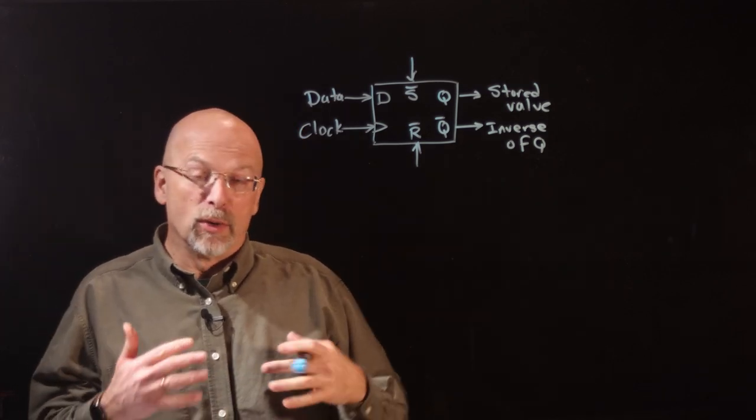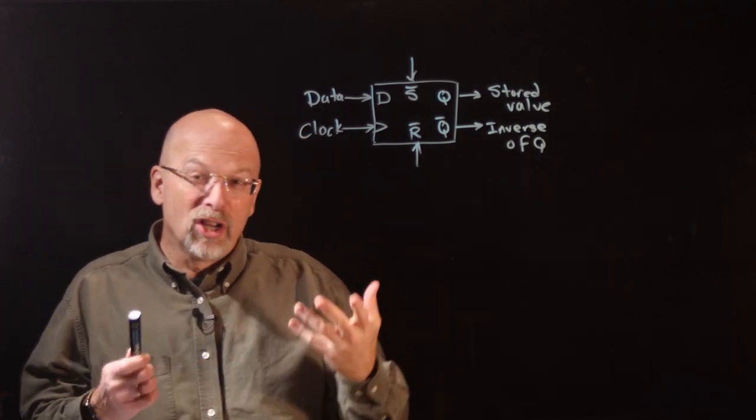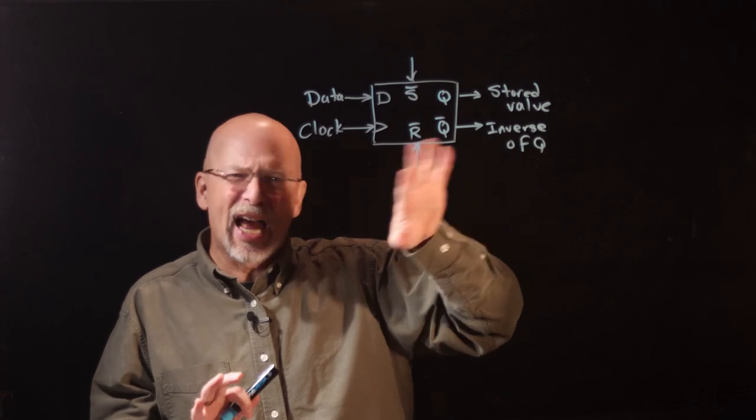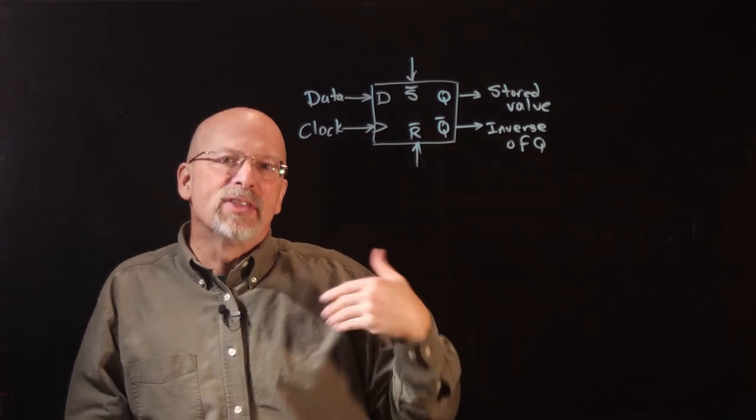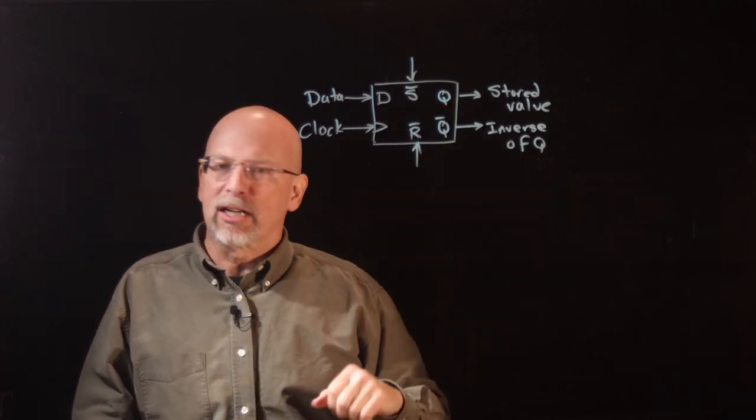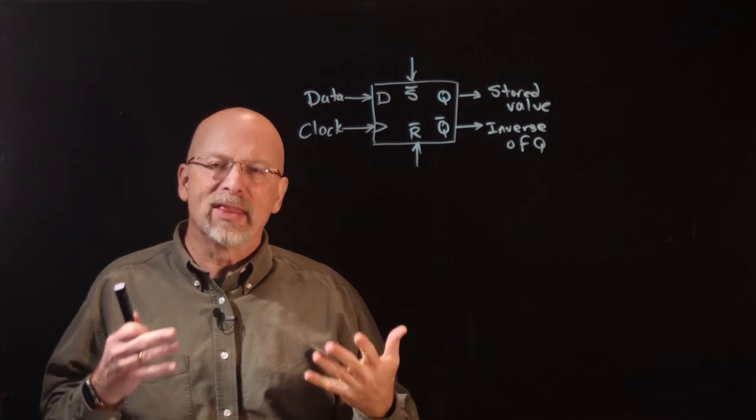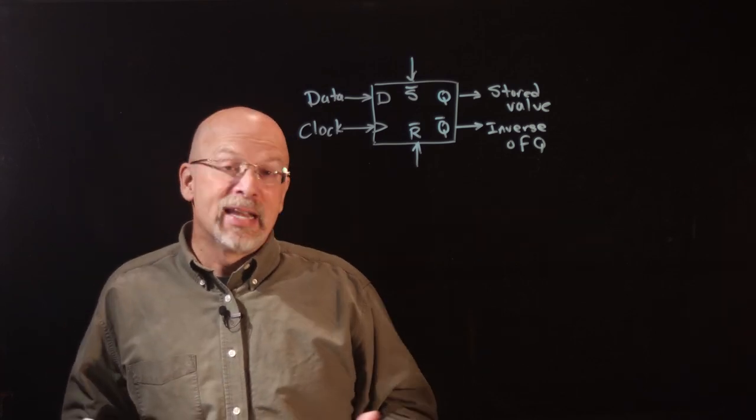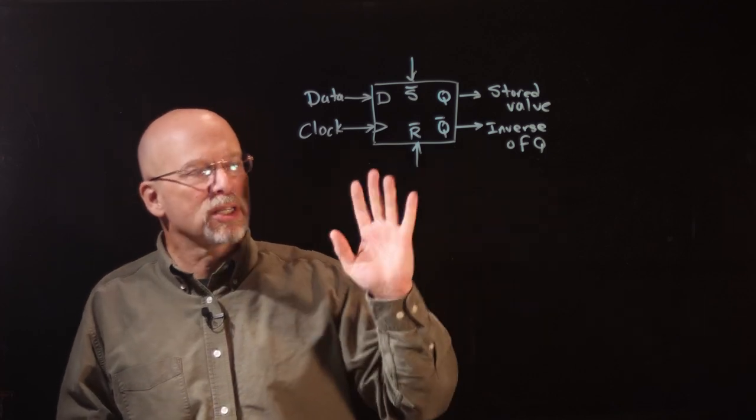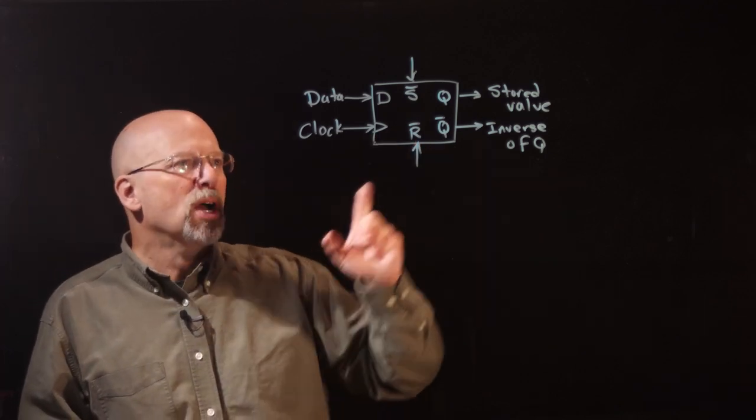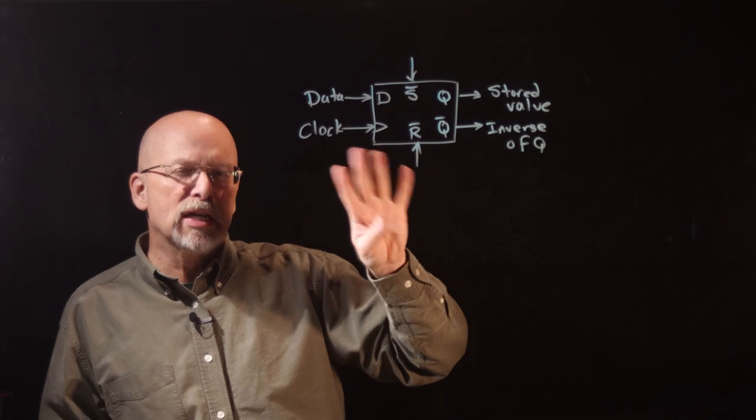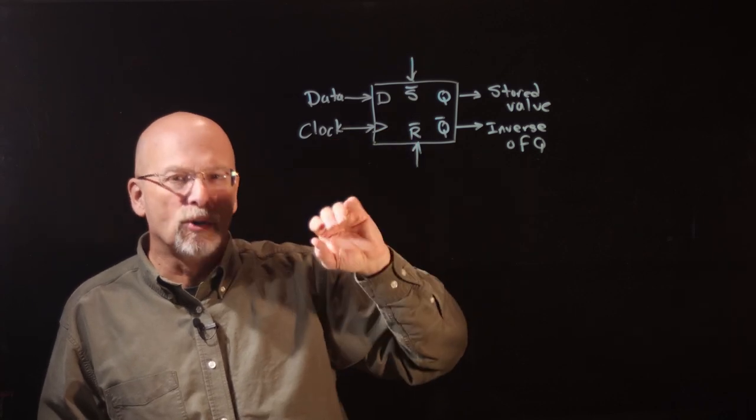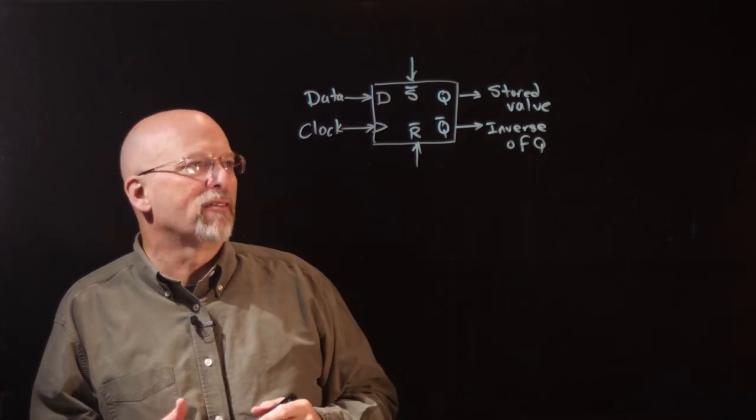And basically, the inverse of Q always has to be stored along with Q. Even if it's not coming out of the box, the inverse of Q is going to be in the box because it's part of the natural way that we store, with logic gates, a bit value. Now, let's talk about some applications. And before, actually, before we do, let's talk about the four different ways that this diagram, this single-cell memory, could have been set up.